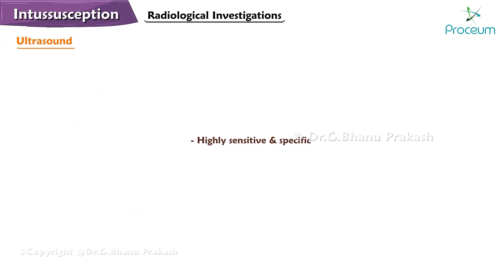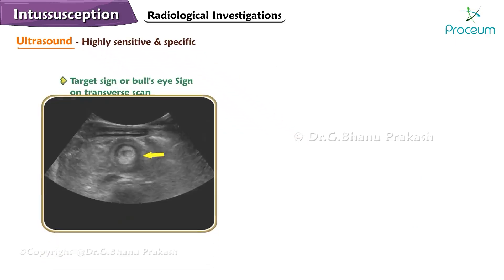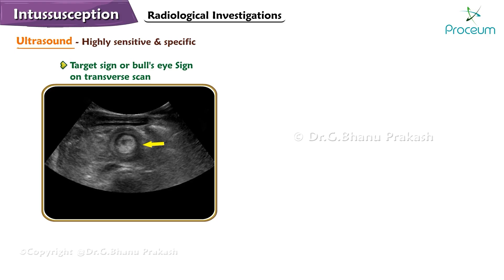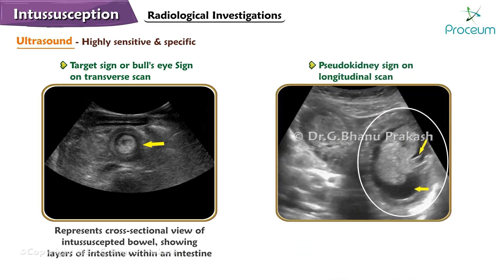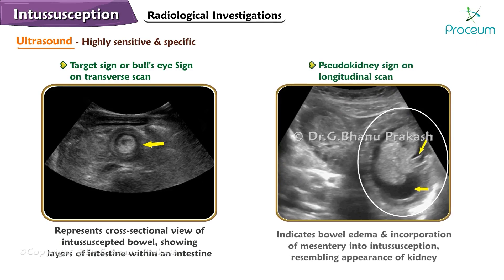Ultrasound is highly sensitive and specific for diagnosing intussusception, showing distinct signs. The target sign or bullseye sign on transverse scan represents the cross-sectional view of the intussuscepted bowel, showing layers of the intestine within an intestine. The pseudokidney sign on longitudinal scan indicates bowel edema and the incorporation of mesentery within the intussusception, resembling the appearance of a kidney.